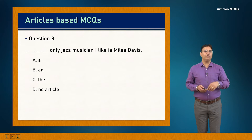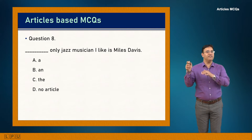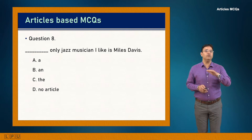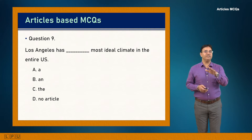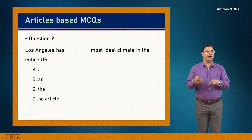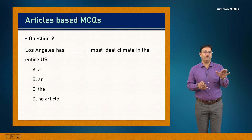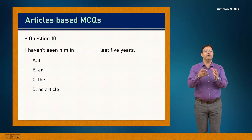Question 8: Dash only jazz musician I like is Miles Davis. The noun is identified by the clause, making it definite — 'The only jazz musician I like is Miles Davis.' Answer is C. Question 9: Los Angeles has dash most ideal climate in the entire US. For superlative forms we use 'the.' Answer is C — 'the most ideal climate.'